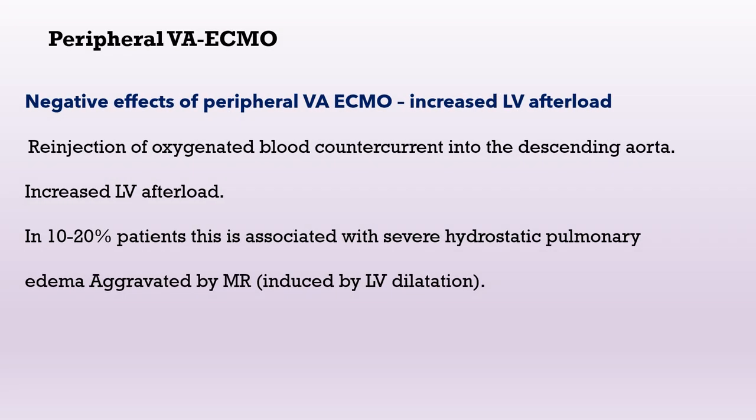A significant effect of peripheral VA ECMO is increased left ventricular afterload. This occurs because oxygenated blood is re-injected in the opposite direction to the blood coming from the ejecting heart. Both streams meet in the descending aorta, which increases left ventricular afterload. Ten to twenty percent of patients will develop severe hydrostatic pulmonary edema, and this edema can be aggravated by mitral regurgitation induced by left ventricular dilatation.